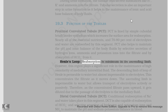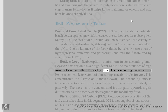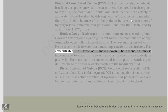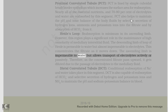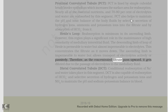Henle's loop: reabsorption is minimum in its ascending limb. However, this region plays a significant role in the maintenance of high osmolarity of medullary interstitial fluid. The descending limb of loop of Henle is permeable to water but almost impermeable to electrolytes, which concentrates the filtrate as it moves down. The ascending limb is impermeable to water but allows transport of electrolytes actively or passively. Therefore, as the concentrated filtrate passes upward, it gets diluted due to the passage of electrolytes to the medullary fluid.